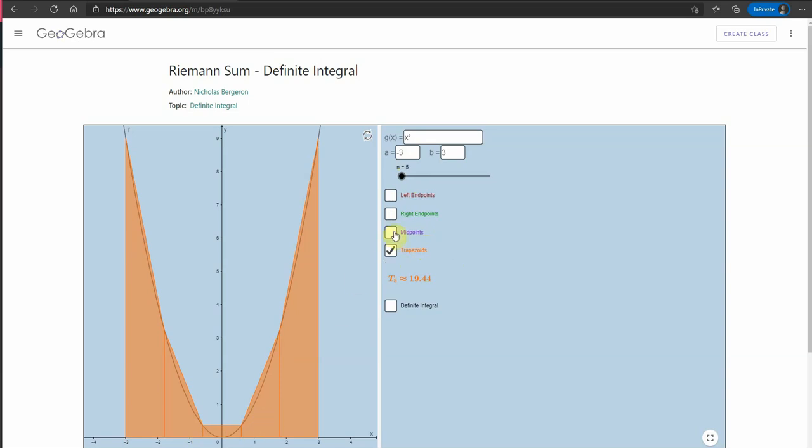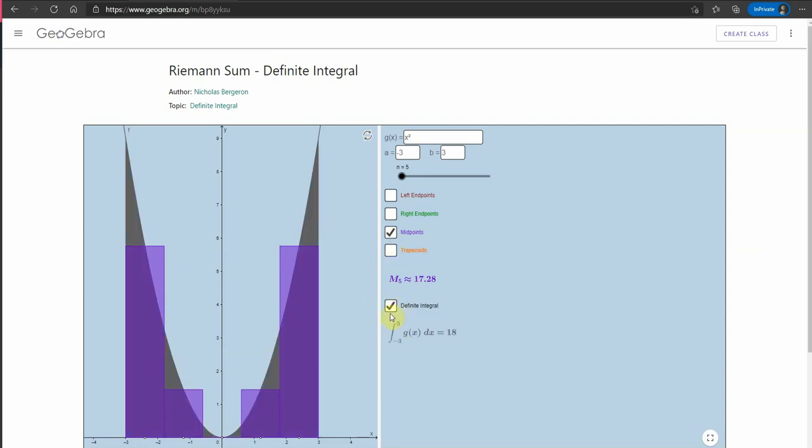Or we could use the midpoint of each of those original strips. If we go back to the original ones, halfway between x is minus 3 and minus 2, so x is minus 2.5. If we draw a rectangle there, using the midpoint of each strip, going up to the curve and then drawing a rectangle, that's another way we could approximate this area.